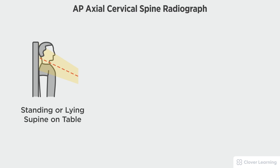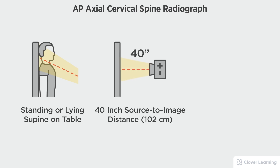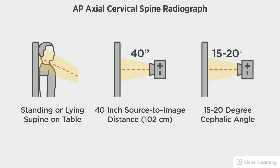In this view we will be demonstrating an AP axial view of the cervical spine. The AP axial cervical spine should be performed with the patient standing at the upright bucky or lying on the table with a 40 inch source to image distance and a 15 to 20 degree cephalic tube angulation.